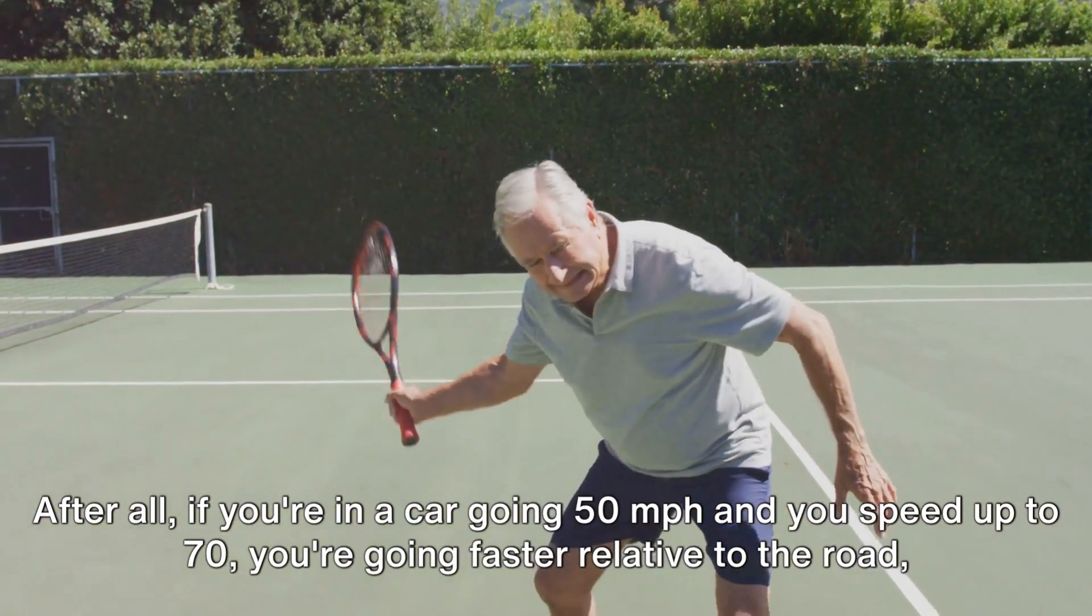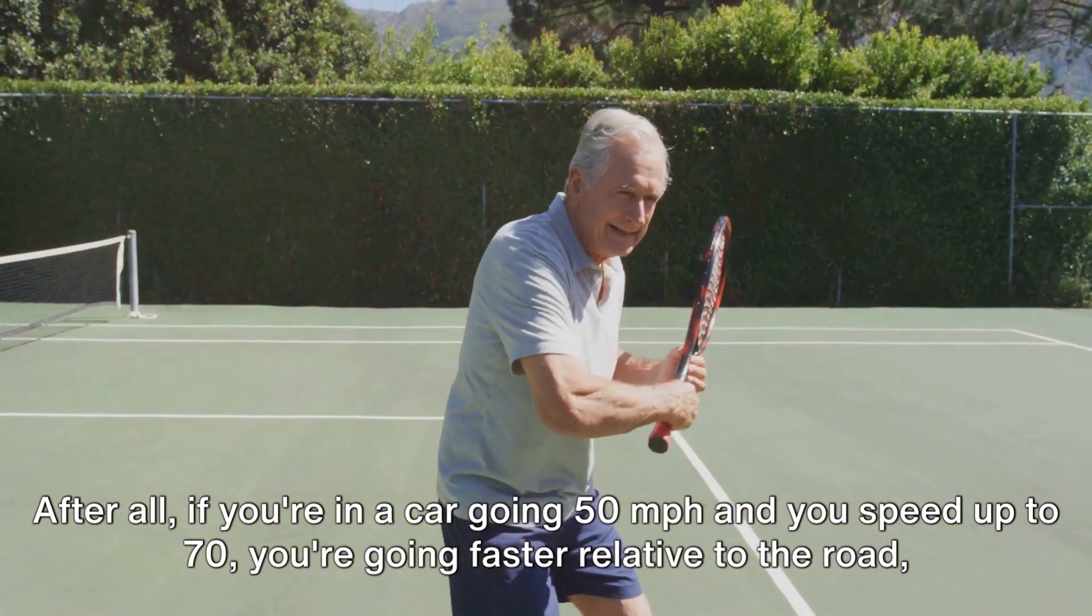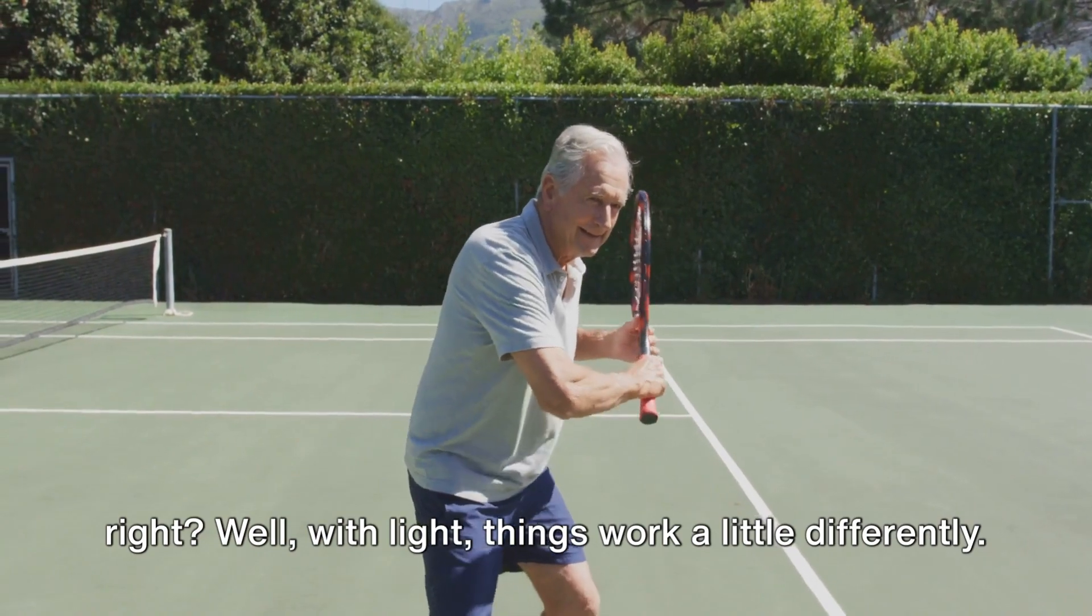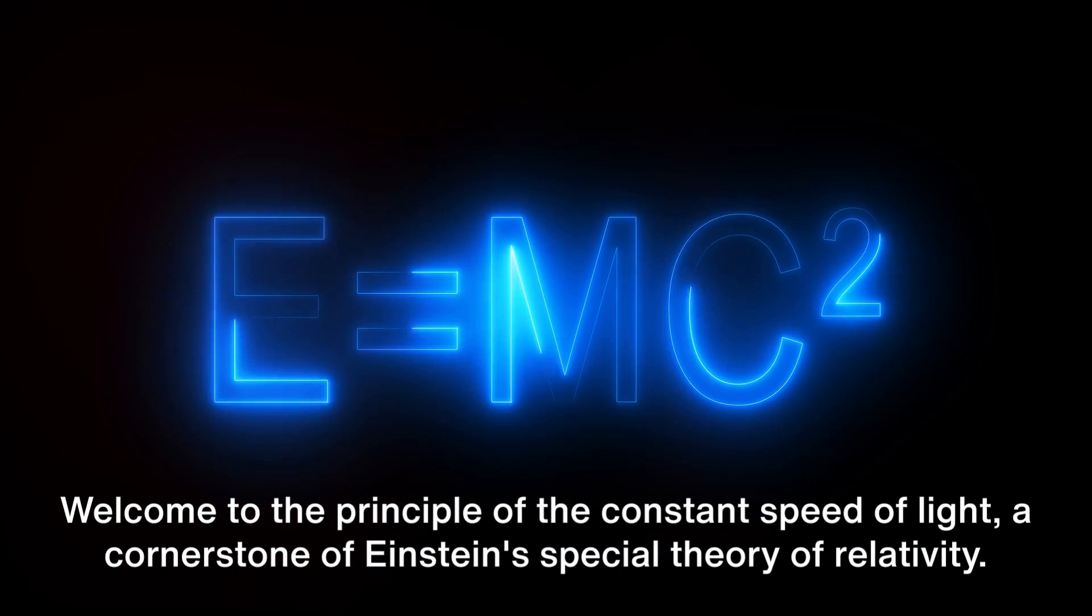Now, this is something that might sound a bit odd at first. After all, if you're in a car going 50 miles per hour and you speed up to 70, you're going faster relative to the road, right? Well, with light, things work a little differently.